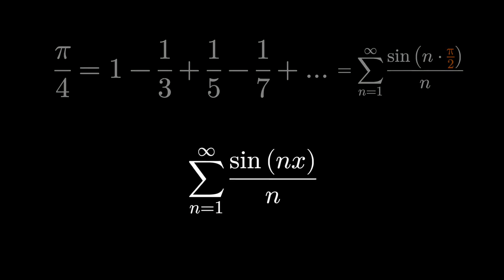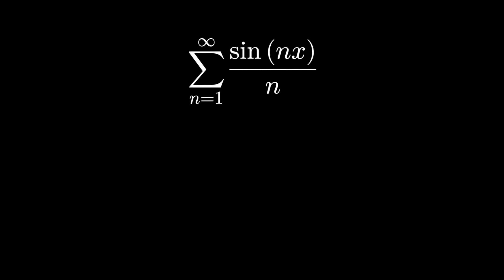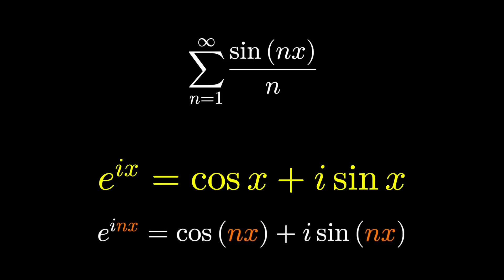Getting there might be a little tricky though, we're going to have to use a different representation for sine. In fact we'll use one of my favorites, we'll use the famous Euler's formula e to the ix equals cosine x plus i sine x, or if you like instead of x substitute nx.